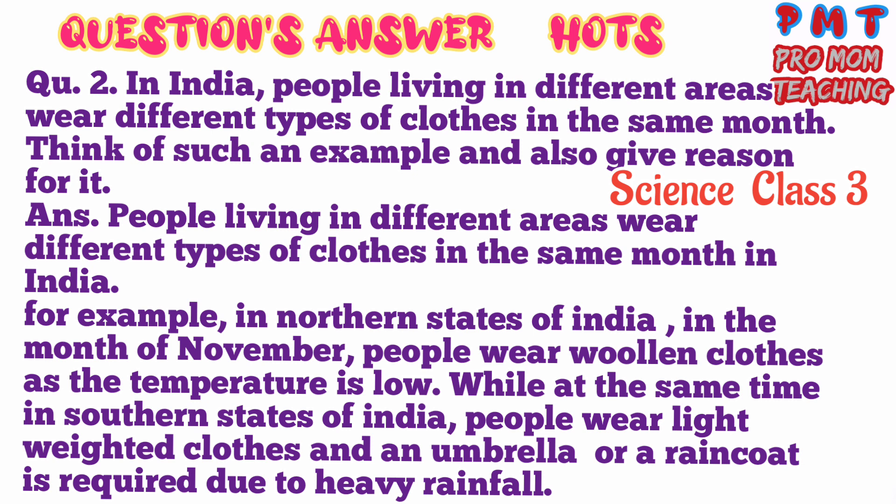Question number two. In India, people living in different areas wear different types of clothes in the same month. Think of such an example and also give reason for it. Answer: in northern states of India, in the month of November, people wear woolen clothes as the temperature is low. While at the same time, in southern states of India, people wear light clothes and an umbrella or raincoat is required due to heavy rainfall.